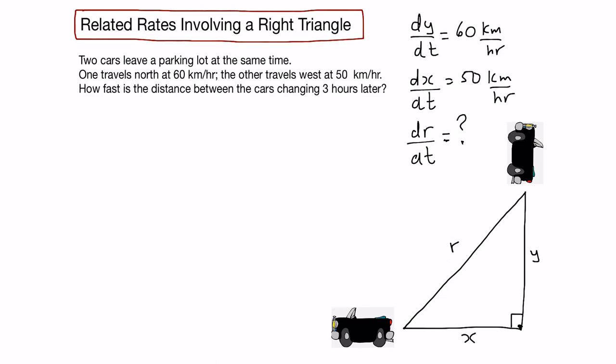They want this at the instant three hours after both cars leave the parking lot, so t equals 3 hours. To relate all of these rates, we use the Pythagorean theorem: x squared plus y squared equals r squared.